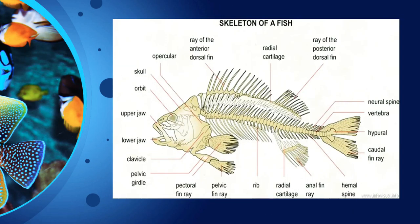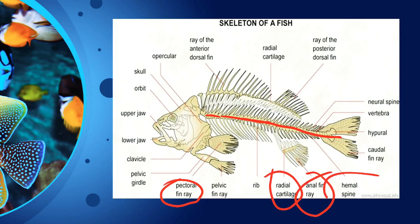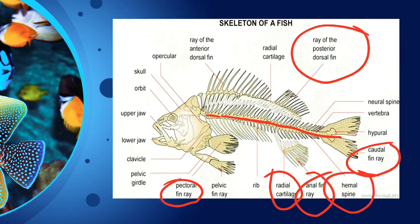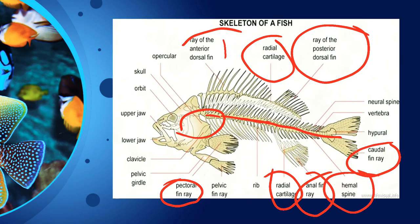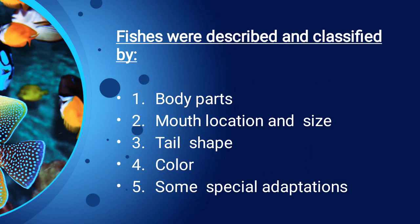Next is the skeleton — this is a fish's skeleton. It includes the pectoral fin ray, pelvic fin, ribs, radial cartilage, anal fin ray, hemal spine, caudal fin ray, ray of posterior dorsal fin, radial cartilage, ray of anterior dorsal fin, and upper operculum.